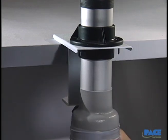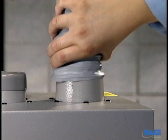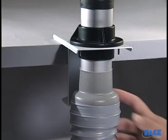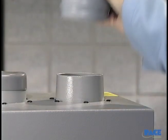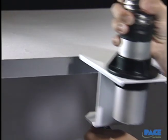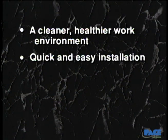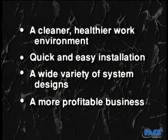Installation of fume extraction systems is quick and simple using ducting, which does not require any glue, tape, or other fasteners. The system can be easily dismantled and reassembled as the production floor layout changes. Fume extraction offers a cleaner, healthier work environment, quick and easy installation, a wide variety of system designs, and a more profitable business.